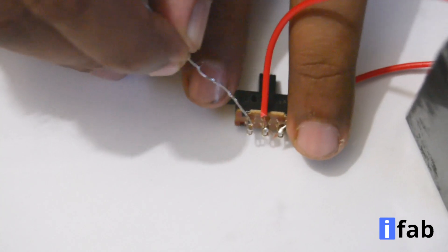Take the other 100 ohm resistor. Now connect the 100 ohm resistor to the other end of the switch.